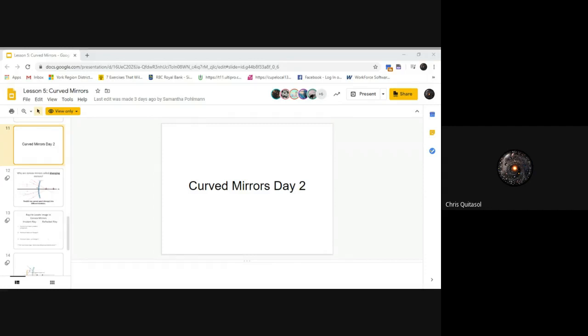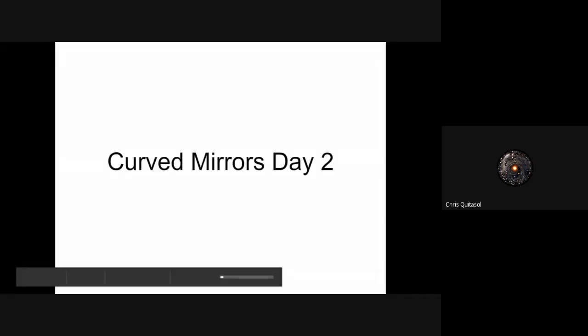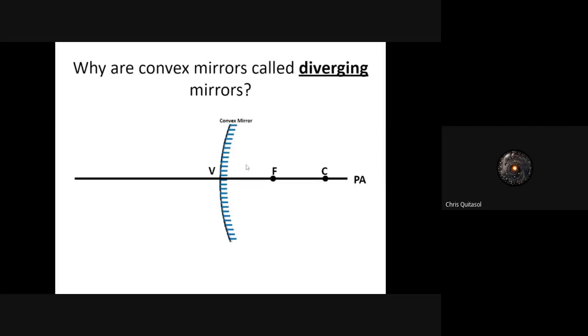Welcome to day two of curved mirrors. I'm going to go over the important components of how we use curved mirrors to predict where the image of something is. It will be a little bit different from day one because we will be looking at a specific type of mirror — a diverging mirror, or convex.